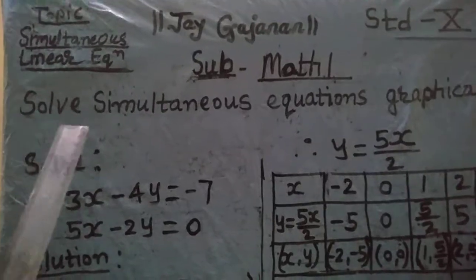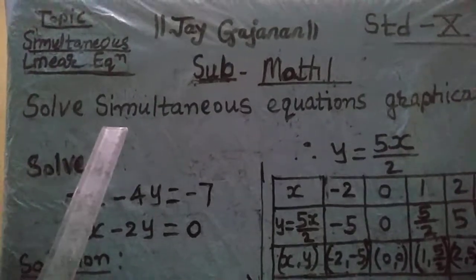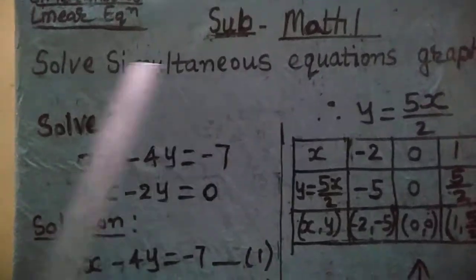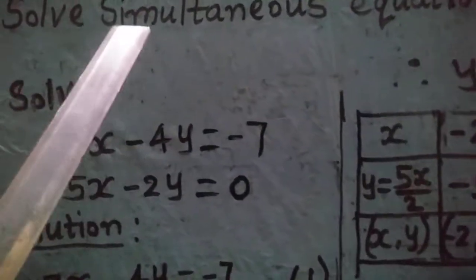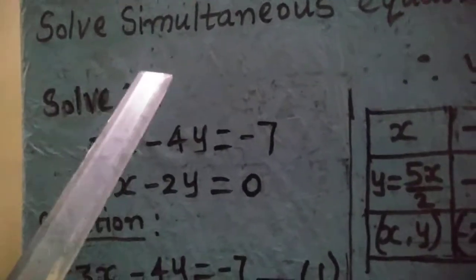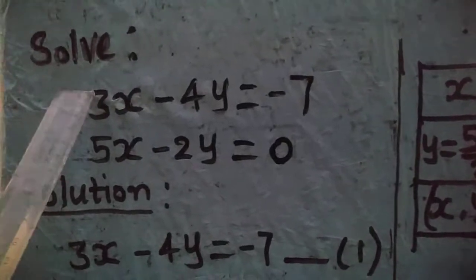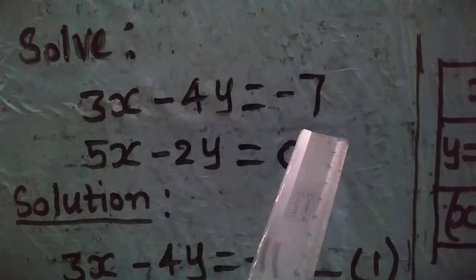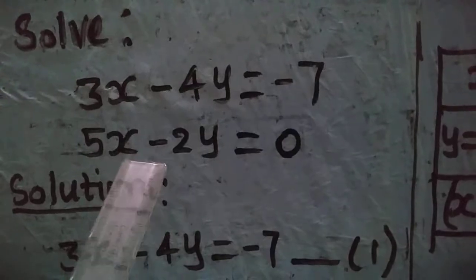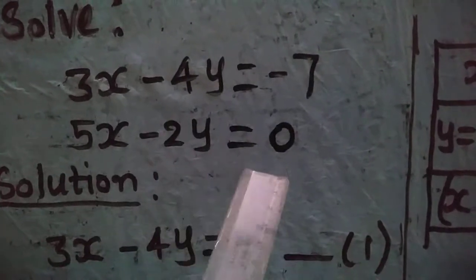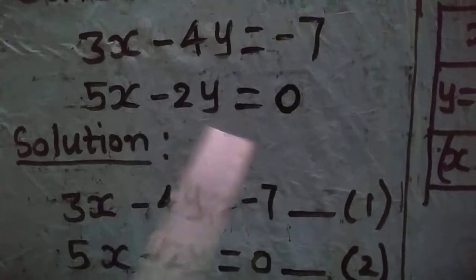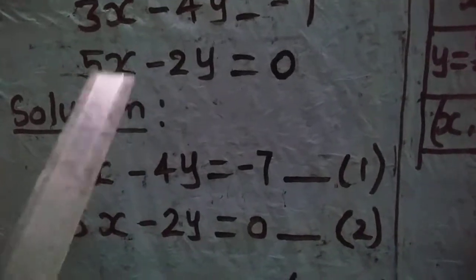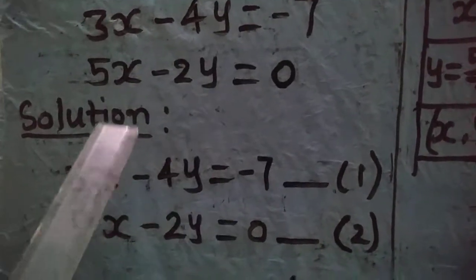Good morning to all of you. Today we are going to discuss solving simultaneous equations graphically. We will solve 3x - 4y = -7 and 5x - 2y = 0. These are two simultaneous equations and we have to solve them graphically.